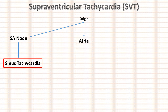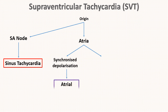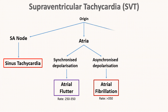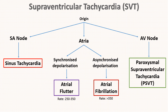Next is origin from the atria. Atrial originating SVT is further divided upon type of depolarization. If it is synchronized, the cause is atrial flutter, where rate is around 250-350 per minute. And if it is non-synchronized, the cause is atrial fibrillation, where rate is usually more than 350 per minute. Last is origin from the AV node, and the cause is paroxysmal supraventricular tachycardia, often called PSVT.